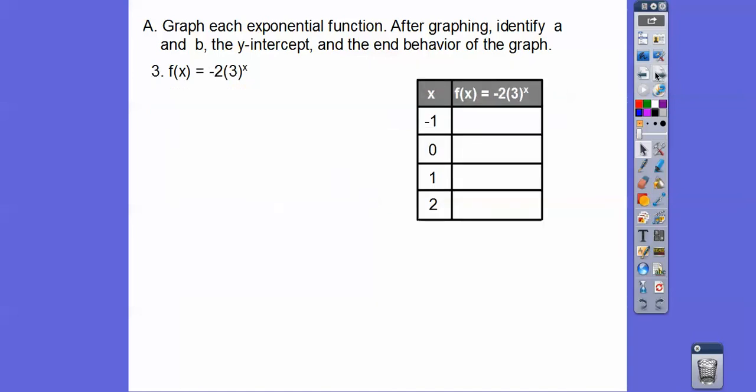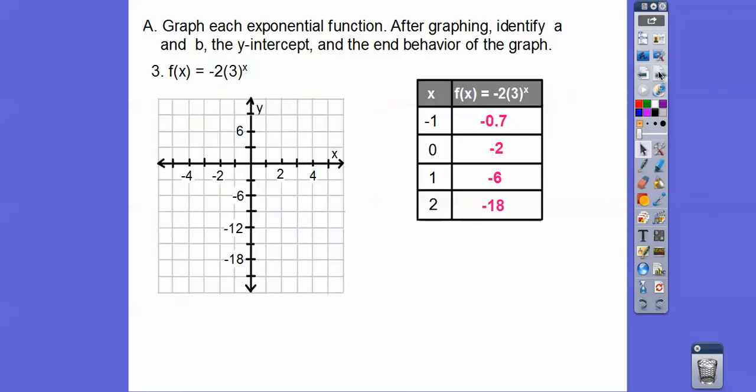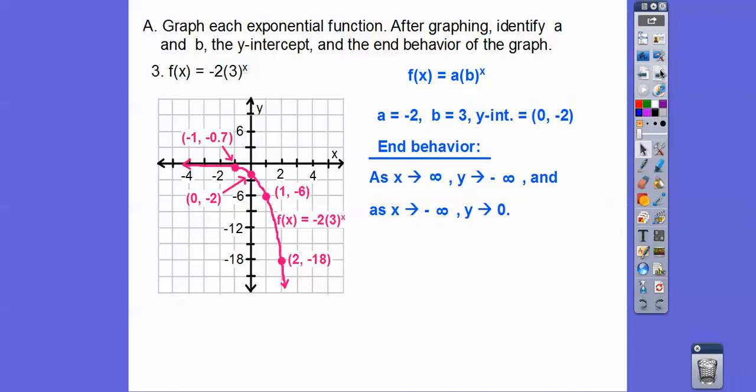This one's going to change a little bit. When we plug in negative 1, 3 to the negative 1 is 1 over 3, which gives us negative 2 thirds, which is negative 0.7. Plug in 0, we get negative 2. Plug in 1, we get negative 6, because 3 to the 1 is 3 times negative 2 is negative 6. When we plug in 2, we get negative 18. When we graph these points, to the left 1, it's going to go down 0.7. 0, negative 2 would be right about there. 1, negative 6 would be right there. 2, negative 18 would be right there. So when we graph those points, this graph is going like that. There's our end behavior and the a and b, and the y-intercept.